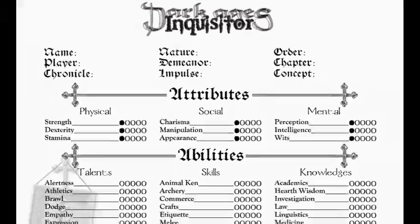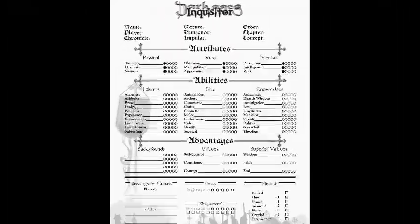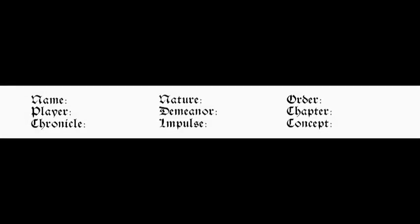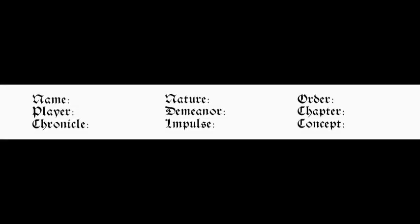Let's take a look at the Dark Ages Inquisitor character sheet. First you have all the familiar self-explanatory stuff like the name of the character, the name of the player, and the name of the Chronicle — just like with every other White Wolf game.